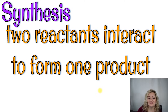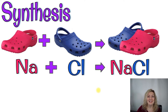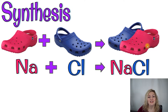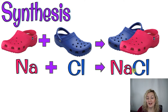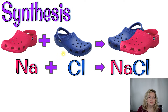The first one is going to be synthesis, which is when two reactants interact to form one product. Using crocs: we start with a pink croc plus a blue croc and they equal a blue and pink croc together. Chemically, the pink croc represents sodium, the blue croc represents chlorine, and the reaction yields sodium chloride — or just table salt. We took two simple reactants and formed one compound.